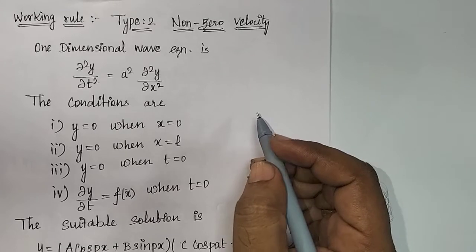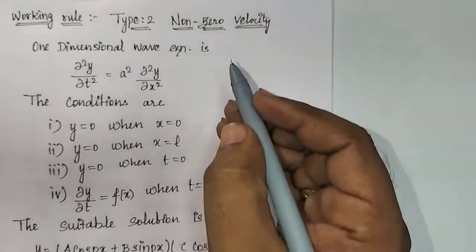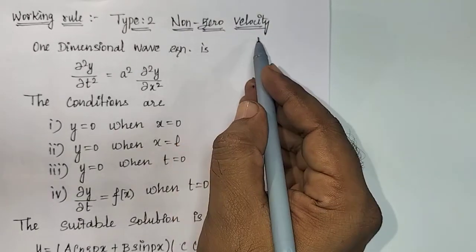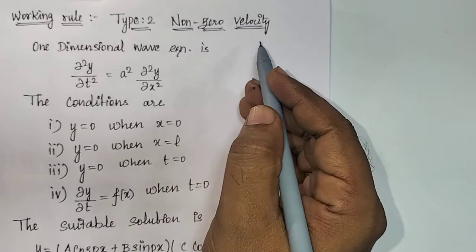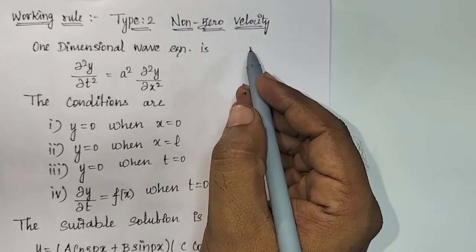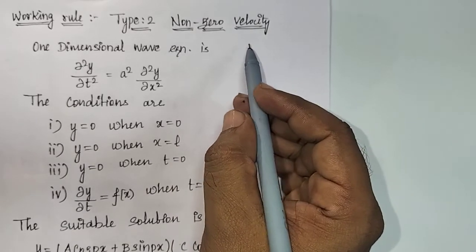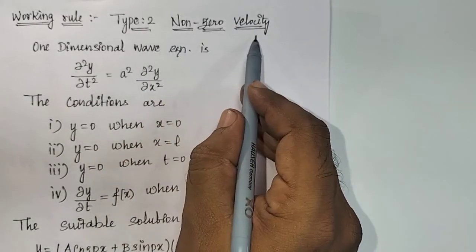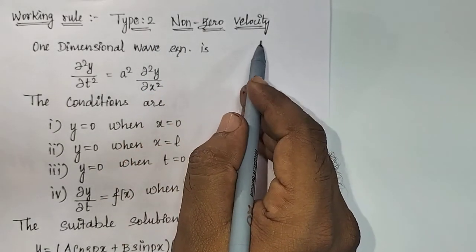In that last video, we completed the working rule procedure for zero velocity. In this video, we are going to start Type 2 model — non-zero velocity.